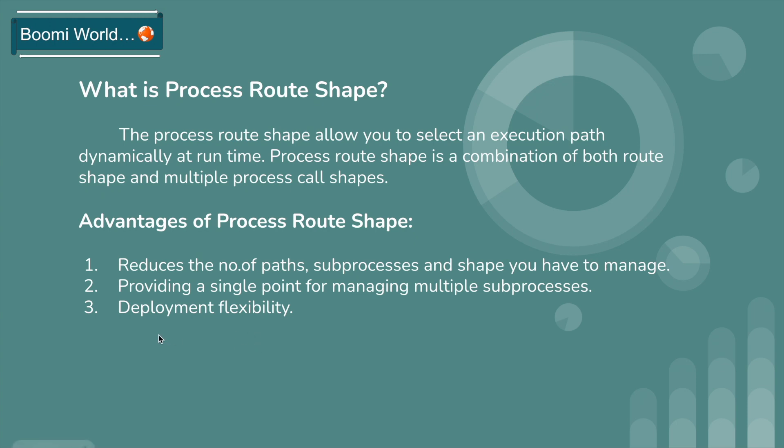By using Process Route Shape, we can reduce the number of paths, sub-processes, and shapes you have to manage. Process Route Shape will provide a single point for managing multiple sub-processes. One main advantage of Process Route Shape is deployment flexibility — we can deploy the parent process, Process Route, or Processing Group component and the sub-processes independently.